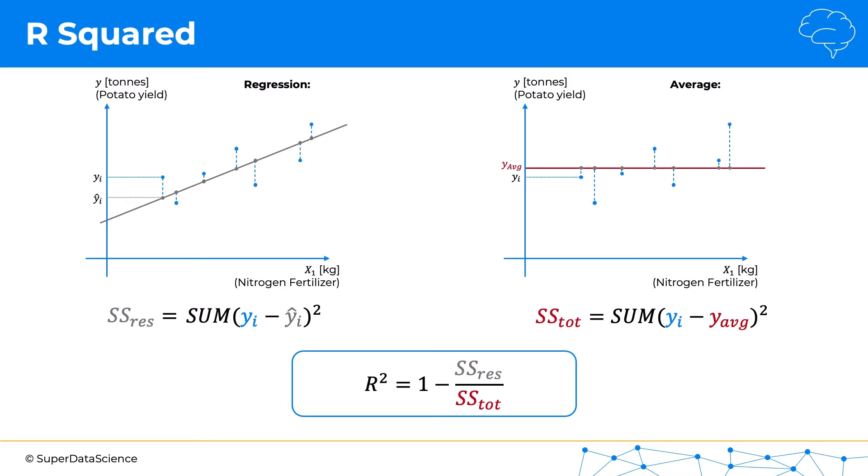So the way to think about it is, in the total sum of squares on the right, you're just putting an average line—you're not modeling anything. This is the most rudimentary thing that we can do: just put an average line and approximate our data with that average line. Of course, it will be, and it should be, worse than any thought-out model that we create, which is the example on the left.